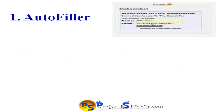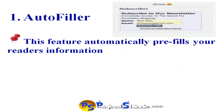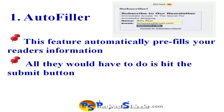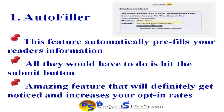The first feature is Autofiller. This feature automatically pre-fills your reader's information when your readers visit your blog again. All they would need to do is hit the submit button and boom — they are in your mailing list. This is an amazing feature that will definitely get noticed by visitors and readers and will increase your opt-in rates significantly.